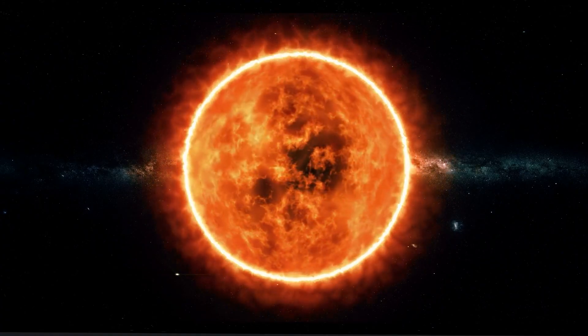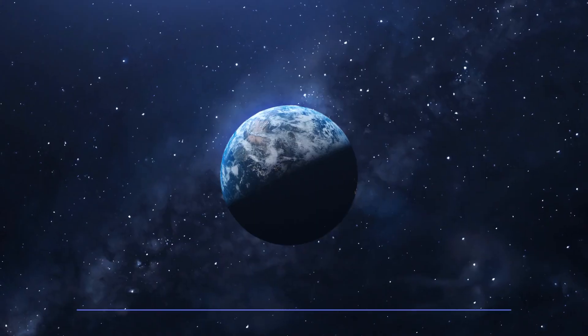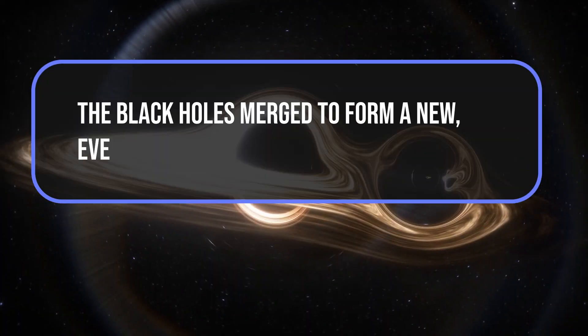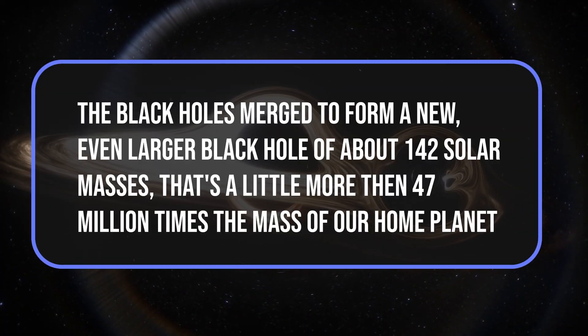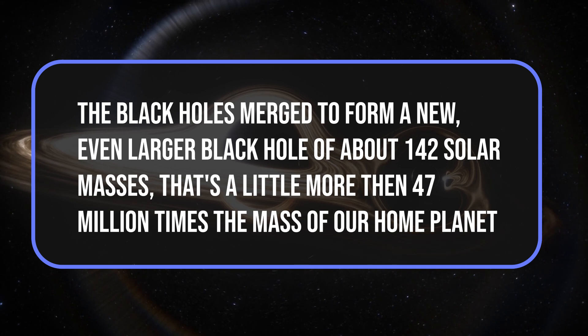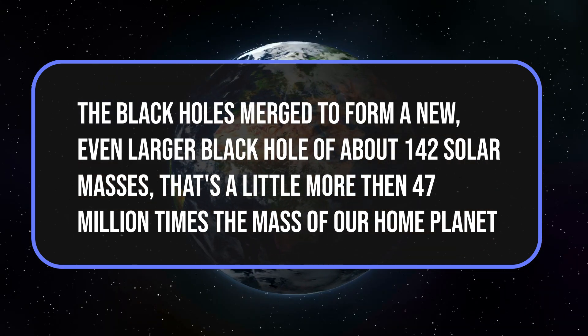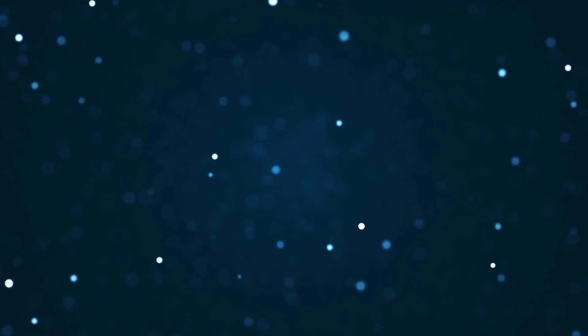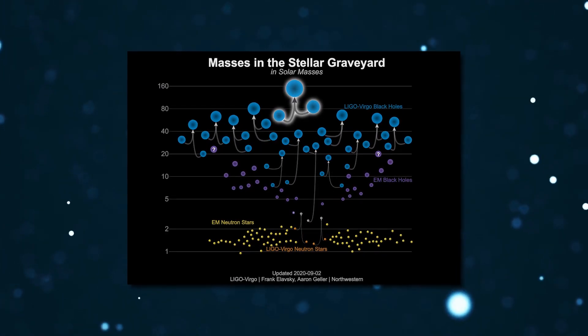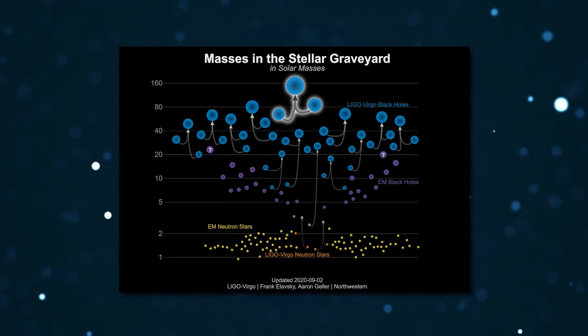One solar mass equals the mass of the sun. That's about 333 times Earth's mass. The black holes merge to form a new, even larger black hole of about 142 solar masses, that's a little more than 47 million times the mass of our home planet, emitting the energetic equivalent of eight solar masses in the process, hence the powerful signal picked up by the detectors.